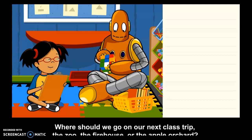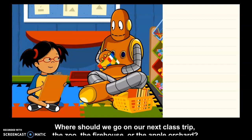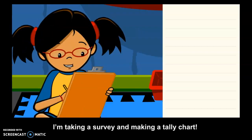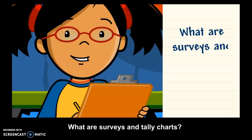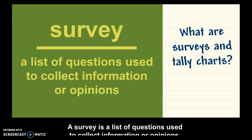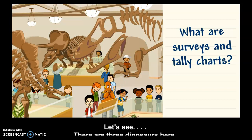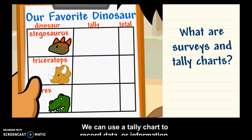Where should we go on our next class trip? The zoo, the firehouse, or the apple orchard? I'm taking a survey and making a tally chart. A survey is a list of questions used to collect information or opinions. There are three dinosaurs here. Let's take a survey to find out which one our classmates like best. We can use a tally chart to record data or information.